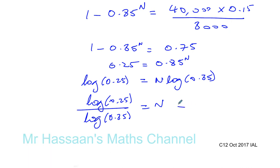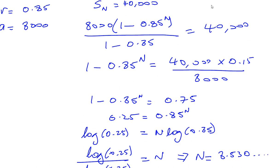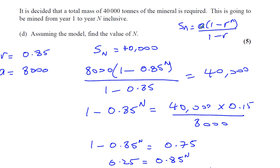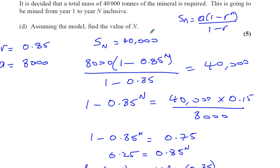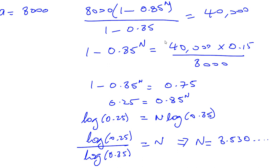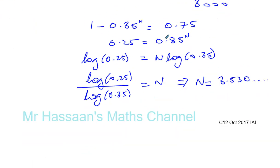So N equals 8.530. We're finding the value of N from year 1 to year N inclusive, and it's going to take basically 9 years.